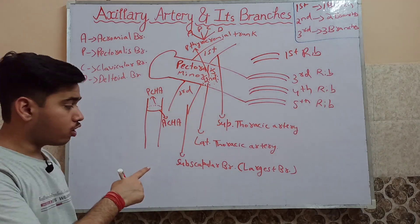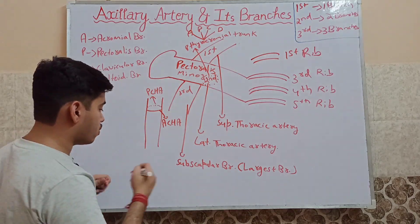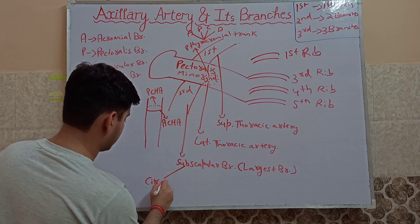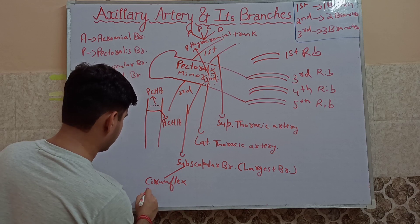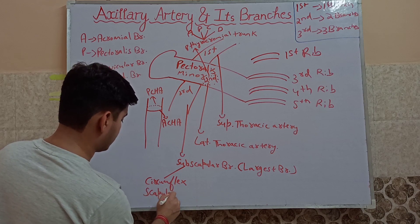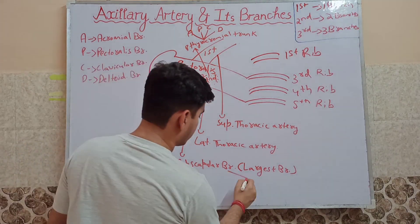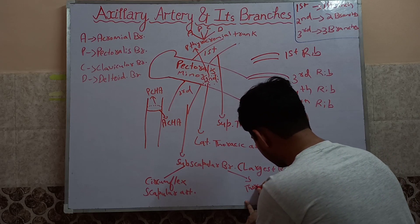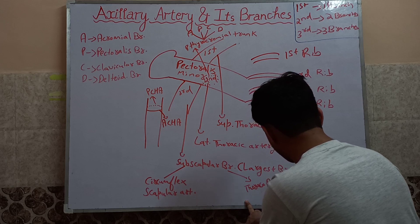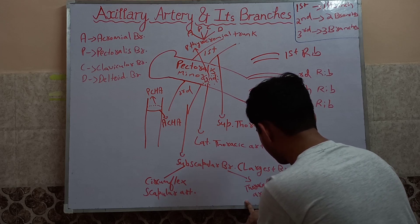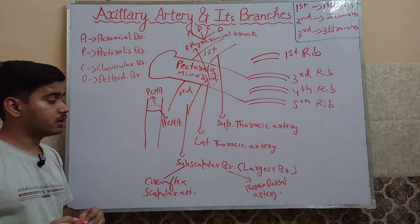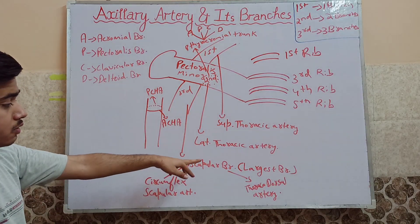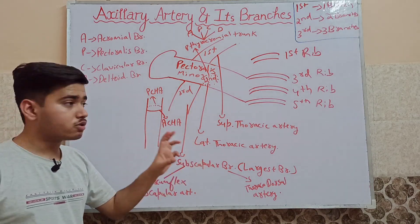The subscapular artery also subdivides into two sub-branches: the circumflex scapular artery and the thoracodorsal artery. We will study the thoracodorsal artery further when we make a video on the subclavian artery. So the subscapular artery, being the largest branch, gives us the circumflex scapular artery and the thoracodorsal artery.